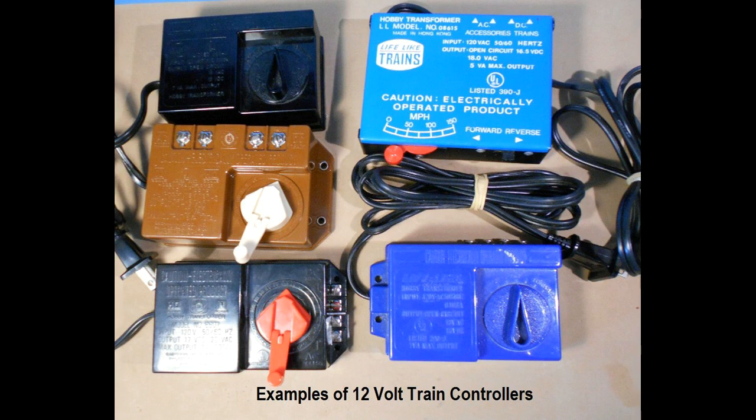A 12-volt train transformer controller with variable DC voltage is also needed to power the train. These train controller transformer units are common as they were used on older train sets from Tyco, Lifelike, Bachmann, or are available from Model Rectifier Corporation. They can be found on eBay or sold at train shows, generally for around five to ten dollars.